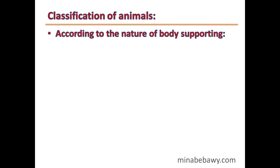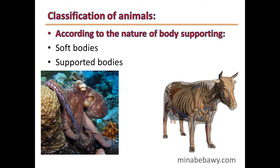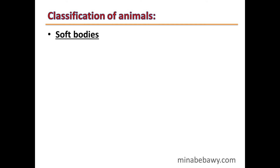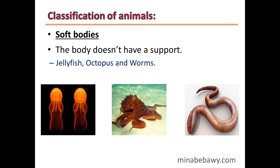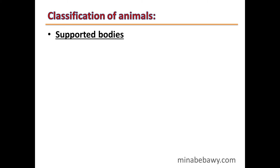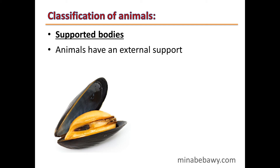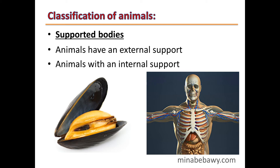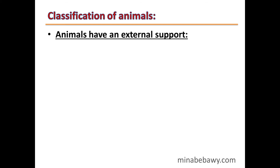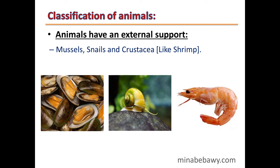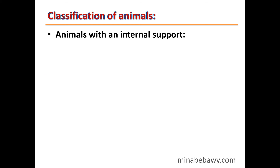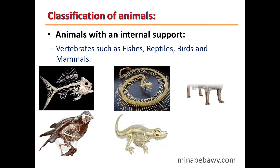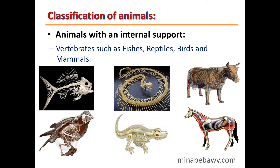Classification of Animals. Animals can be classified according to the nature of body support into soft-bodied and supported-bodied animals. Soft-bodied animals do not have any support, such as jellyfish, octopus and worms. Supported animals are divided into those with an external support — such as mussels, snails and crustaceans like shrimp — and those with an internal support, called vertebrates, such as fish, reptiles, birds and mammals.